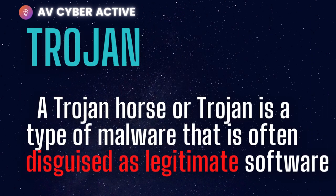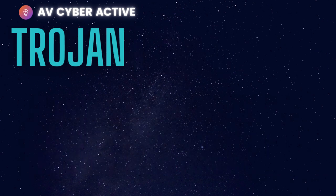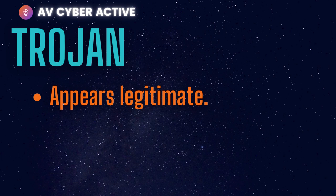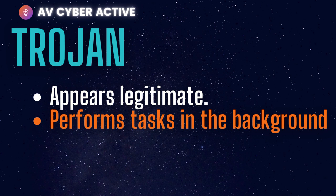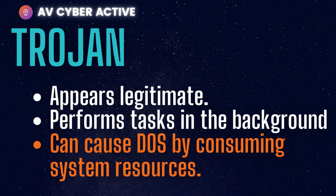Next, what's a trojan horse? A trojan or trojan horse is a type of malware that is often disguised as legitimate software. There are various types of trojan horses, but there are some common behaviors seen across all trojan malware. First, they appear to be legitimate — a regular piece of software acting as if it's harmless. Next, it performs tasks in the background that the user does not know about and should not be performed. It can even cause denial of service by consuming system resources.